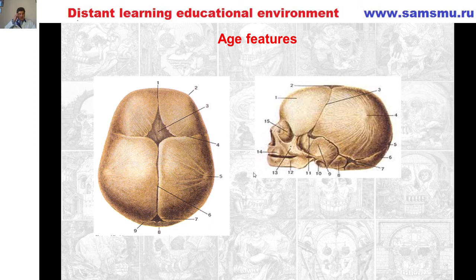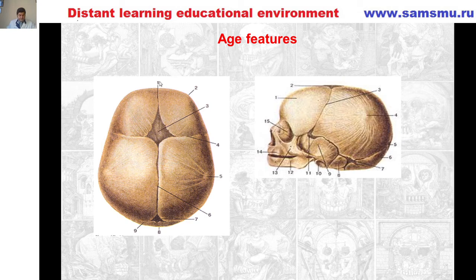In addition to six permanent fontanelles, non-permanent ones can occur in newborns: cerebellar at the posterior edge of the foramen magnum, nasofrontalis between the nasal and two halves of the frontal bone, mediofrontal at the midline of the frontal bone, and sagittal along the sagittal suture. Irregular fontanelles can be the site of cranial hernias — protrusions of the contents of the skull under the skin. Without surgery, such hernias are fatal.